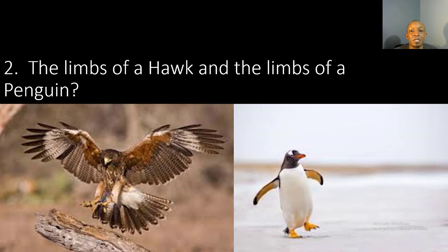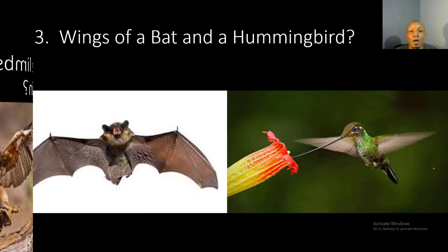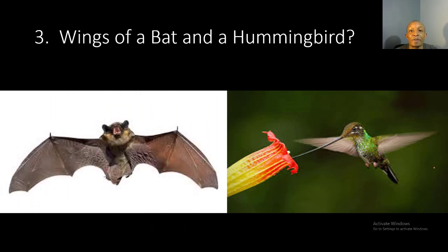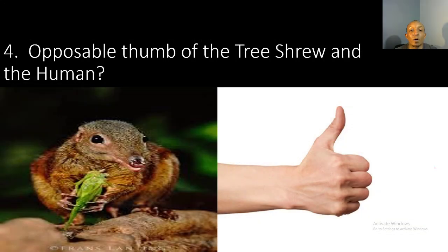Number two: the limbs of a hawk and the limbs of a penguin. You have 10 seconds to respond. Number three: wings of a bat and a hummingbird. You have 10 seconds to respond. Number four: the opposable thumb of the tree shrew and the human. You have 10 seconds to respond.